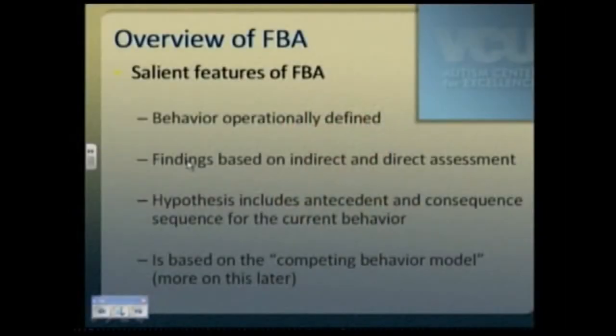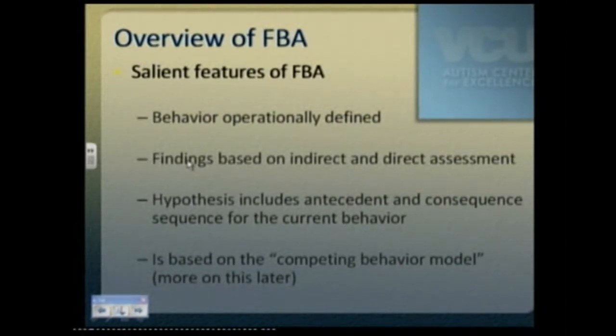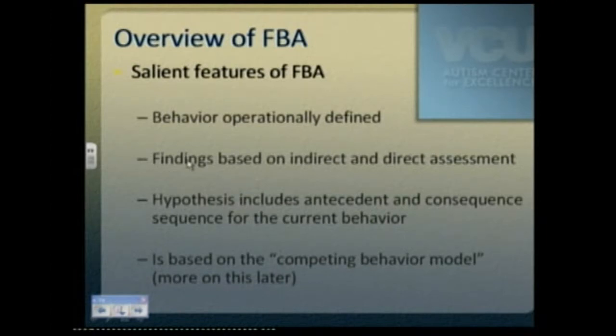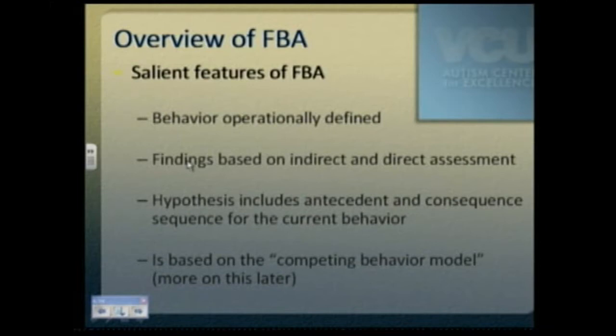The salient features of an FBA include the definition of the behavior that is most challenging. We want to avoid generic terms that don't really define what is happening at the time the problem behavior is occurring. Our findings will be based on two different types of assessment: indirect assessment, where we interview those closest to the behavior, and direct assessment, where we observe the behavior in the context in which it occurs. We will work from the place of using a hypothesis, and we will plug this assessment information into a competing behavior model — that will be the bridge from assessment to positive behavior support planning.